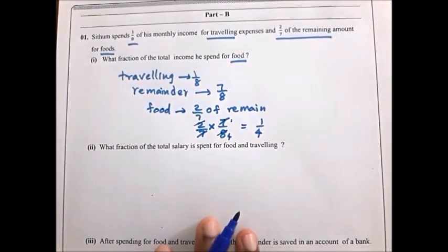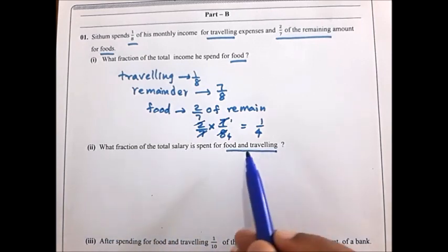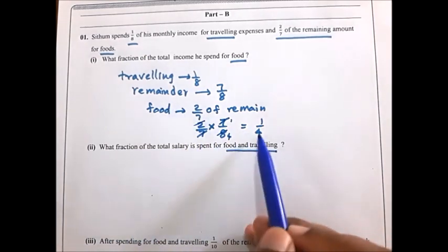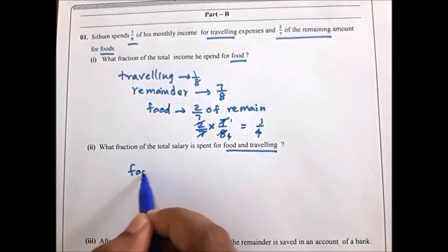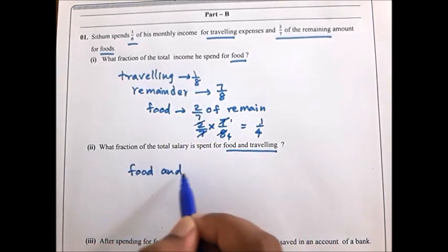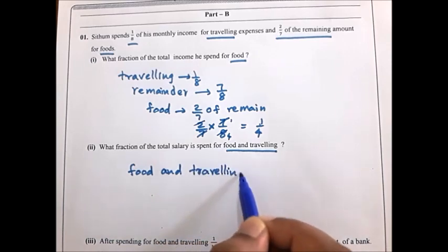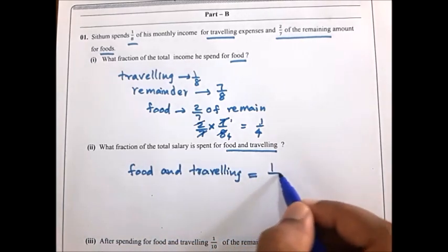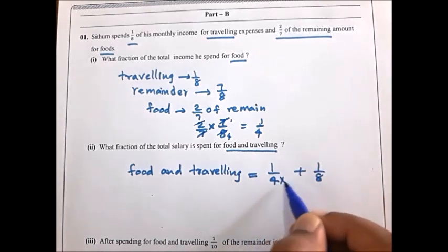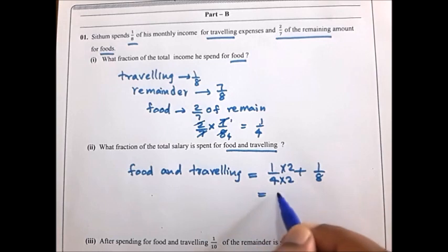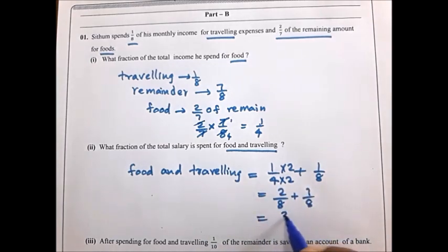Second part: what fraction of total income is spent for food and travelling? Food is 1 over 4 and travelling is 1 over 8. Add these two: 1 over 4 plus 1 over 8. Convert the denominator to 8: 2 over 8 plus 1 over 8. The answer is 3 over 8.